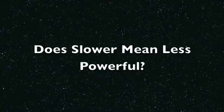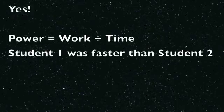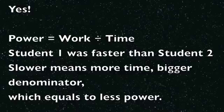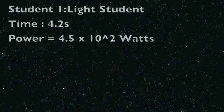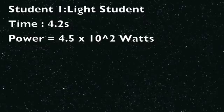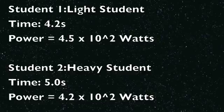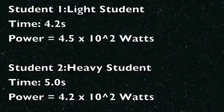Our initial question was: does slower mean less powerful? Yes. Power equals work divided by time. Student one was faster than student two. Slower means more time, which means a bigger denominator, which equals less power. Student one's time was 4.2 seconds and her power was 4.5 times 10 to the 2 watts. Student two's time was 5.0 seconds and her power was 4.2 times 10 to the 2 watts. Student one took less time, therefore making her power greater. So yes, slower does mean less powerful.